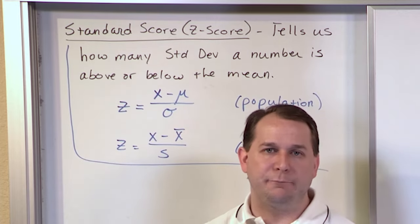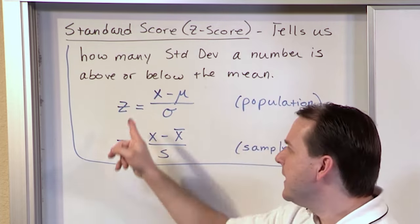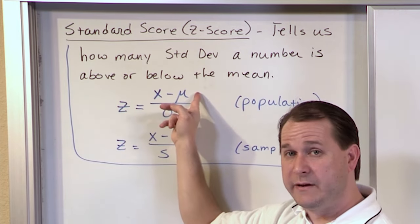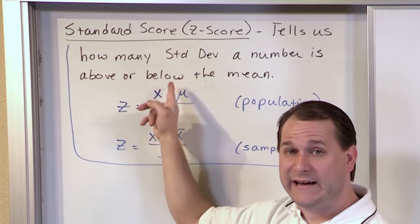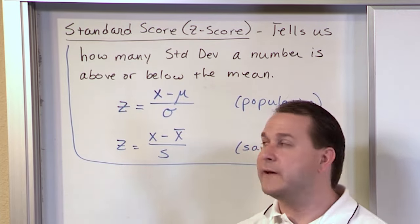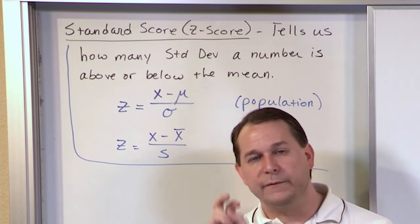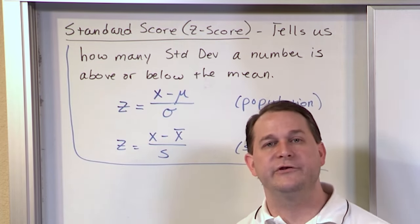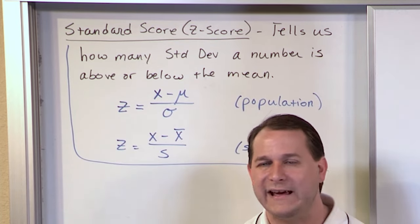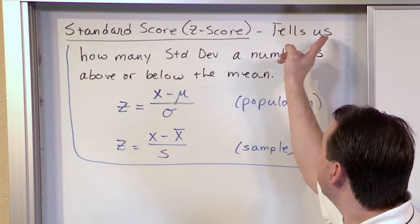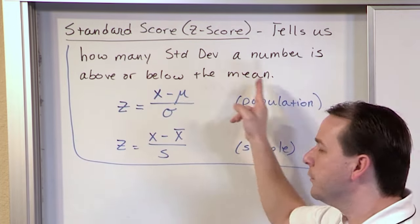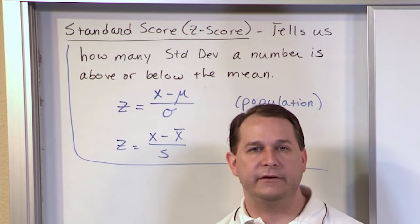So if the standard deviation was five points, I would have 90 minus 80, meaning I'm 10 points ahead of the mean. But the standard deviation is five, so I divide by five. 10 divided by 5 equals 2 — that means I'm two standard deviations in front of the mean. That's what you want to know when calculating Z-scores: how many standard deviations a number is above or below the mean.